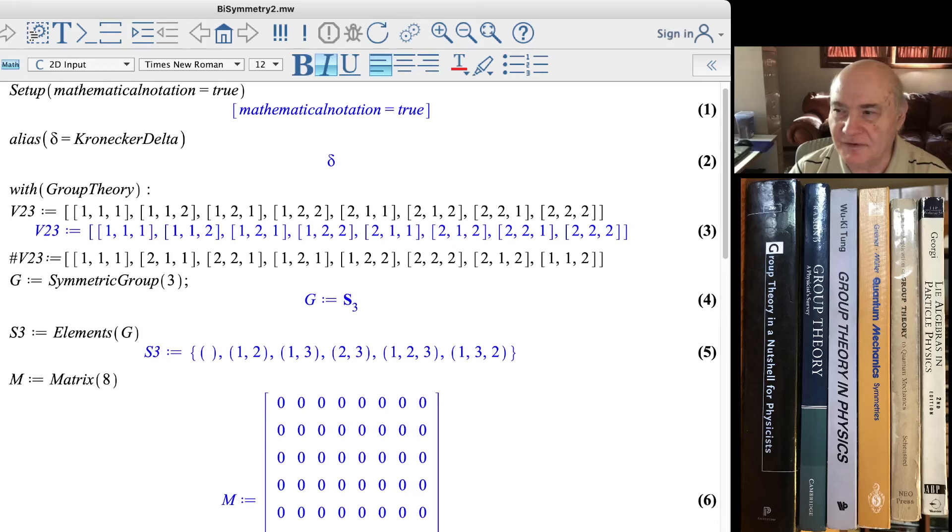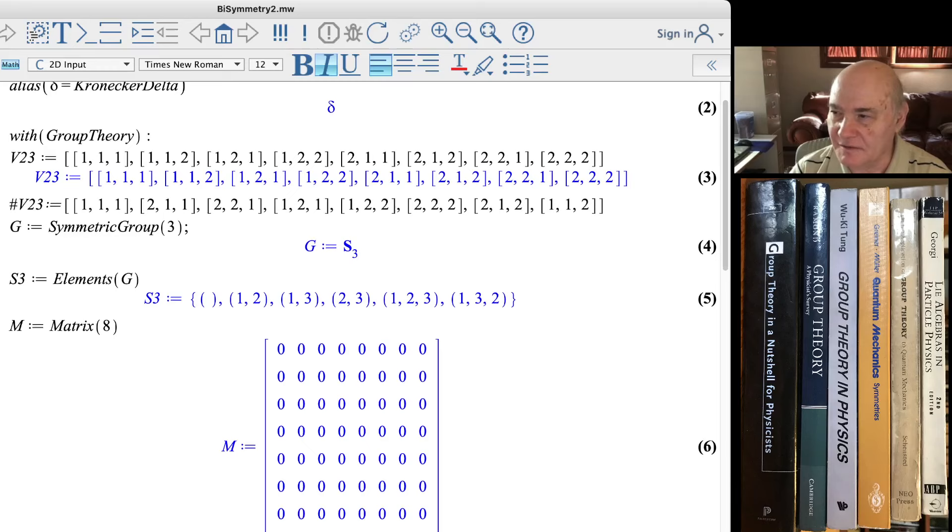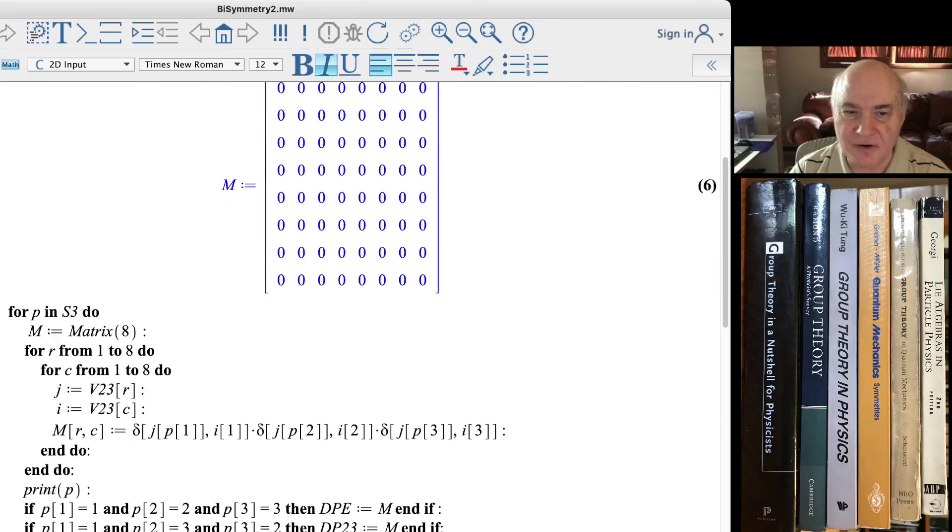But what I liked about it was I was able to use some new packages that I never used. Like they have a group theory package, and you can just take, like, you can set something equal to the symmetric group S3, and then you see the elements of S3. It has, this is in cycle notation, but it has the six permutations of S3. Then you can actually cycle over those permutations.